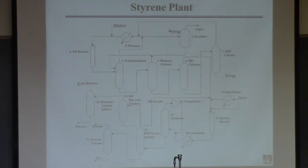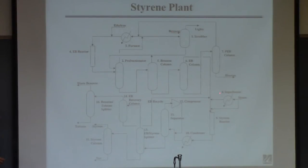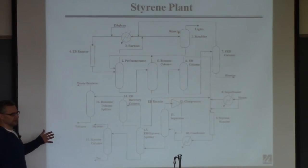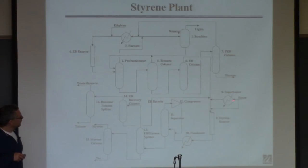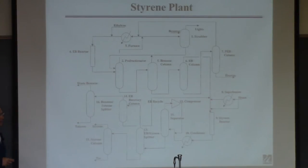Here's a real plant — pretty close to real — making styrene. The first thing you do is react ethyl benzene and benzene to make ethyl benzene, and then react the ethyl benzene to make styrene. This gives an idea of what a real plant looks like: a couple of reactors, an ethyl benzene reactor, a styrene reactor, heat exchange, and many columns — around ten — doing different things, with a lot of recycle of material and energy.